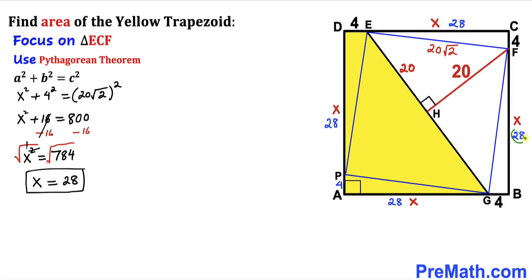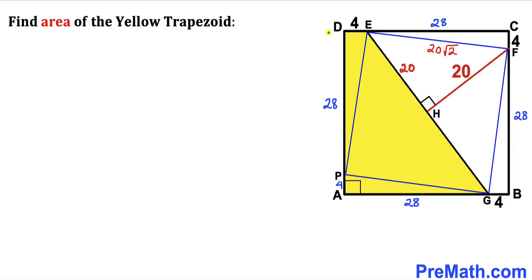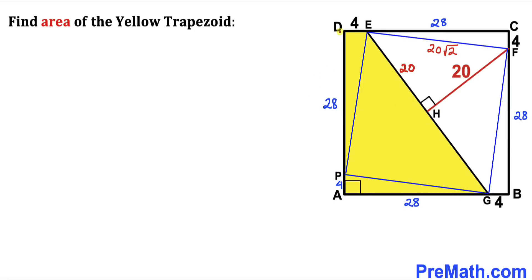Likewise, all the other segments of length X are 28 units as well. Now we observe that the full side length AD is the sum of two individual lengths: 28 plus the tiny length 4, so AD = 32 units. Likewise, side length AG is 28 units.